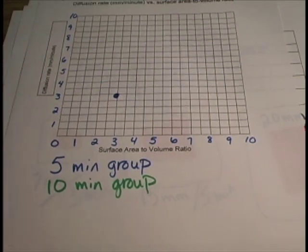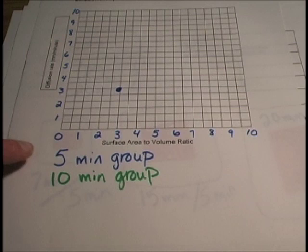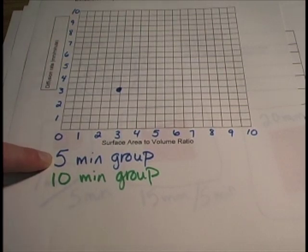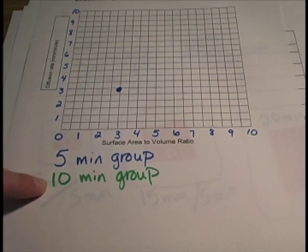You should have six points total: three for the five-minute group for the large, medium, and small cube, and three for the 10-minute group — one each for the large, medium, and small cube.